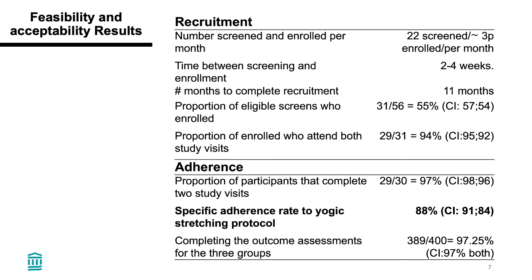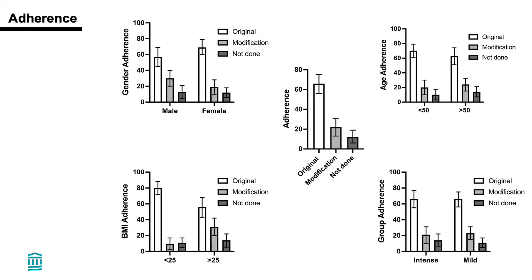Overall, our main aims results indicate that it was feasible to recruit participants and collect and analyze blood samples. This pilot study showed a high 88% adherence rate to the yoga stretching protocol, indicating high feasibility for use in a subsequent larger trial. When we take a closer look at the adherence data, participants with a BMI higher than 25 opted to practice modification options for some postures instead of the original asana. In contrast, we did not see an effect of gender, age, or stretching intensity group on protocol adherence.